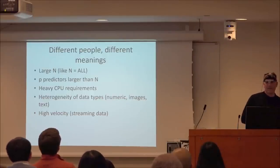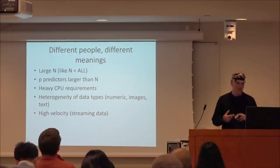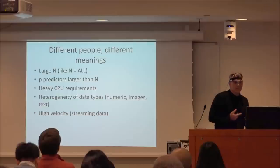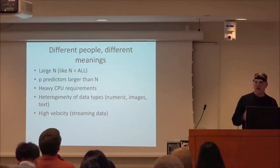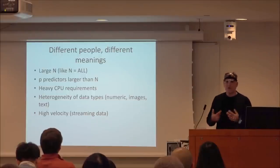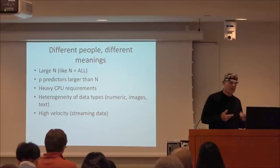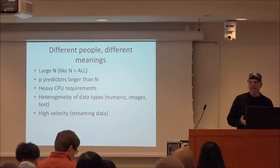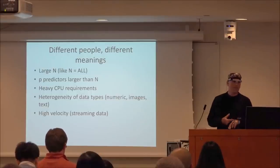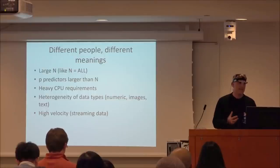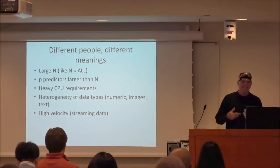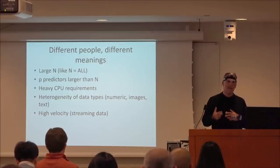Big data means different things to different people. For some it just means lots of subjects — 10 million records from an insurance company. A popular book that came out last year basically talked about N equals all. For some, big data means lots of predictors — millions of predictors where P is greater than the sample size. It might involve heavy computing time for simulations or difficult numerical algorithms. It also means lots of different types of data: texts, images, waveforms from different sources that are difficult to put together, or lots of data coming through in real time — heavy streaming.